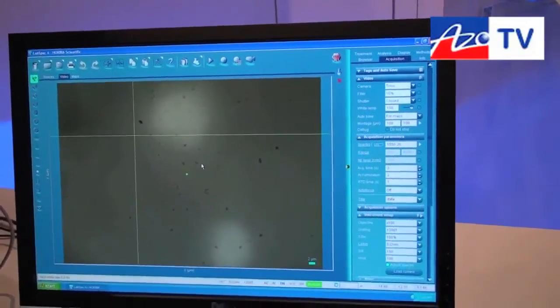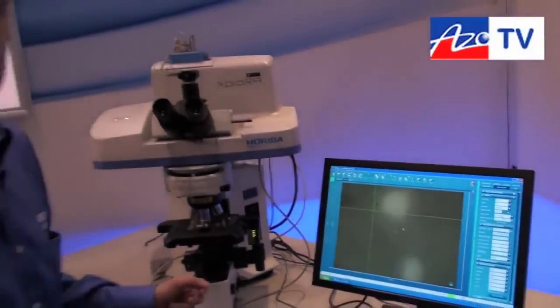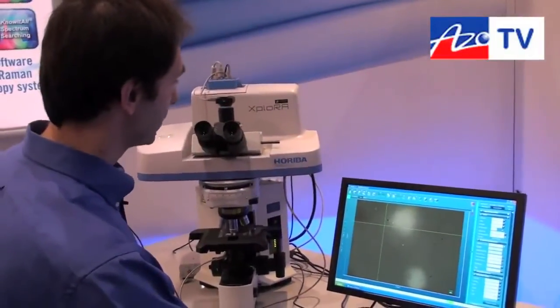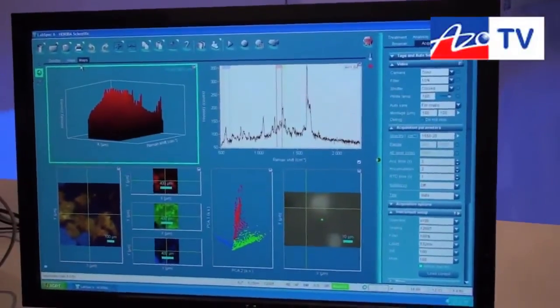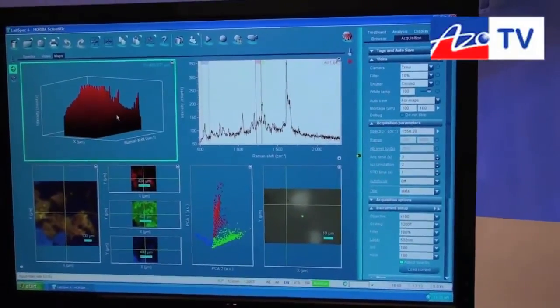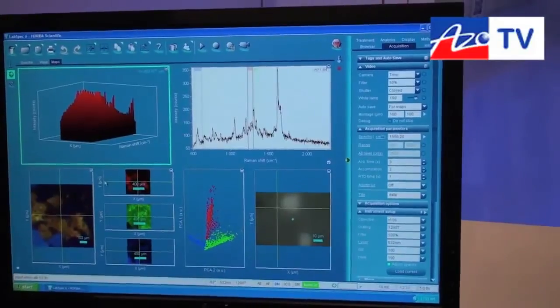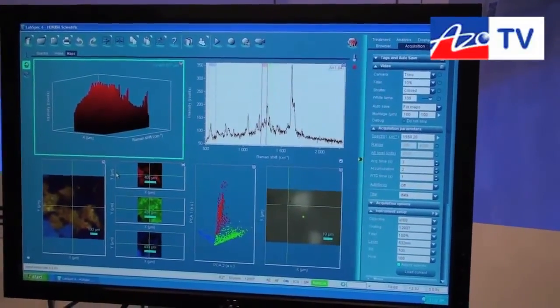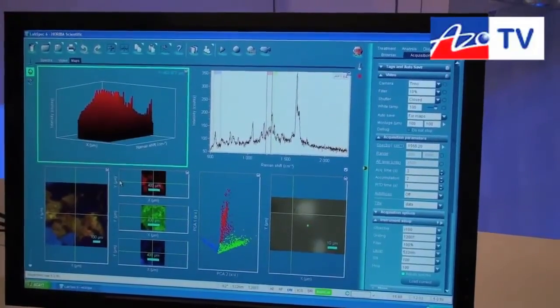Of course you can do this automatically—moving the stage automatically and producing 3D information like what we can see here. You can exploit this 3D information, these multi-spectra, to make a very nice picture illustrating the distribution within the sample, whether it is at the surface or in depth as I started to demonstrate.